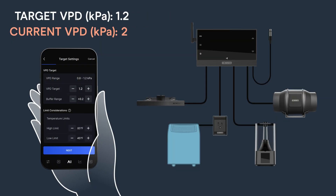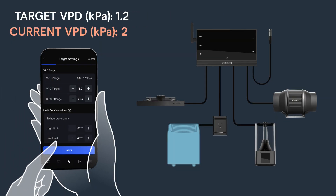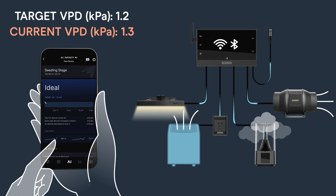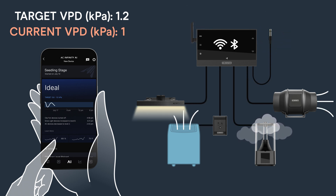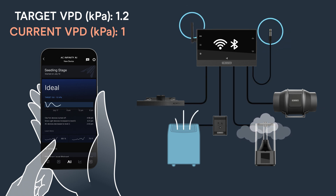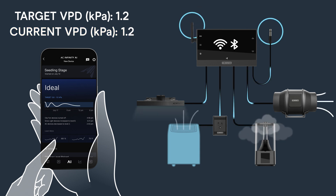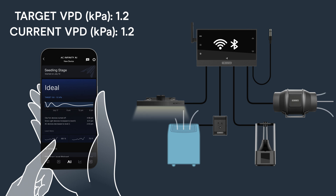In our ecosystem, you simply set your desired climate and the controller will automatically configure your entire setup. Its dynamic programming continuously adjusts every minute, factoring in equipment interactions for the best resulting temperature and humidity variables for your plants.